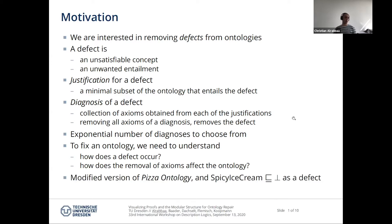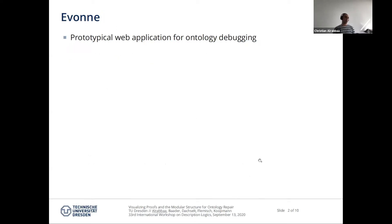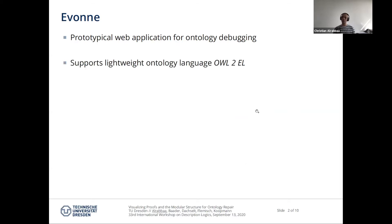In the following, I'm going to use an example with our prototype, where the ontology we consider is a modified version of the pizza ontology and the defect is the unsatisfiable concept spicy ice cream. Our prototype is called Devon. It's a web application for ontology debugging that supports OWL2EL.